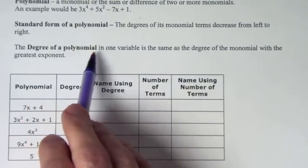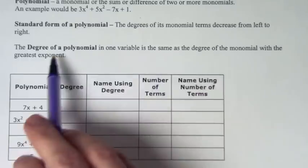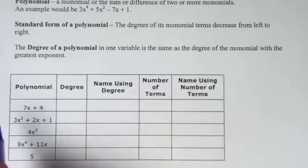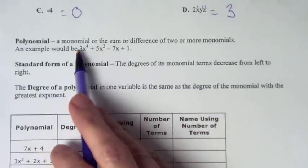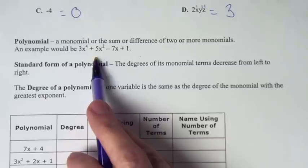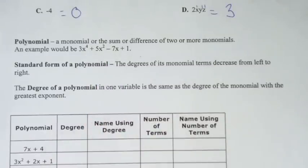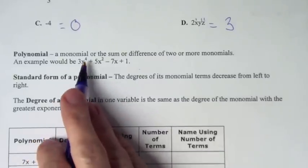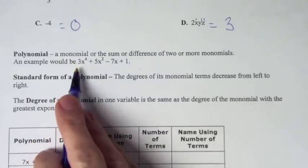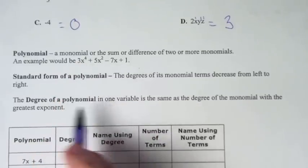The degree of a polynomial in one variable is the same as the degree of the monomial with the greatest exponent. When we're looking at polynomials, we don't look at each degree of each monomial — we look at the degree of the biggest monomial, and that will be the degree of the polynomial. For example, looking at this one, which monomial has the greatest degree? Four. So the degree of this entire polynomial is 4. The difference is: for a monomial, you add up all the exponents in that term; for a polynomial, you take the monomial with the biggest degree.